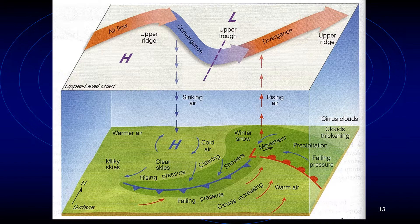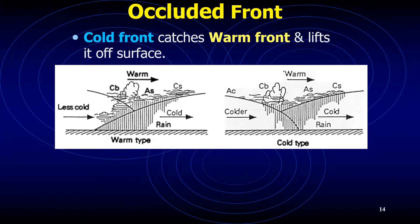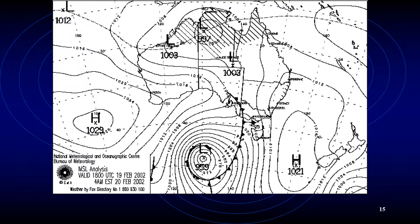Upper air divergence and jet streams aid in the formation of mid-latitude depressions. The core of the mid-latitude depression is always filled with warm air slowly filling with clouds, which provide the latent heat. However, it is surrounded by cold air and high pressure, which slowly takes over the warm air. The occluded front occurs when the cold front catches the warm front and lifts it off the surface, as can be seen where the cold front catches up with the warm front.